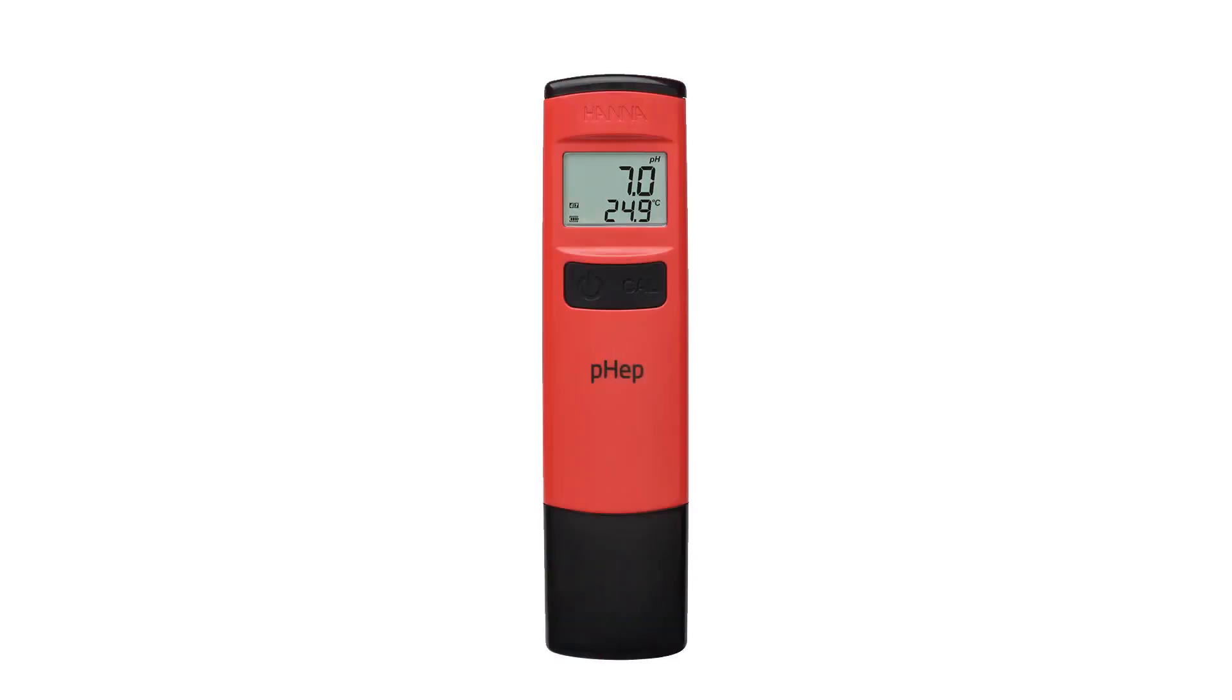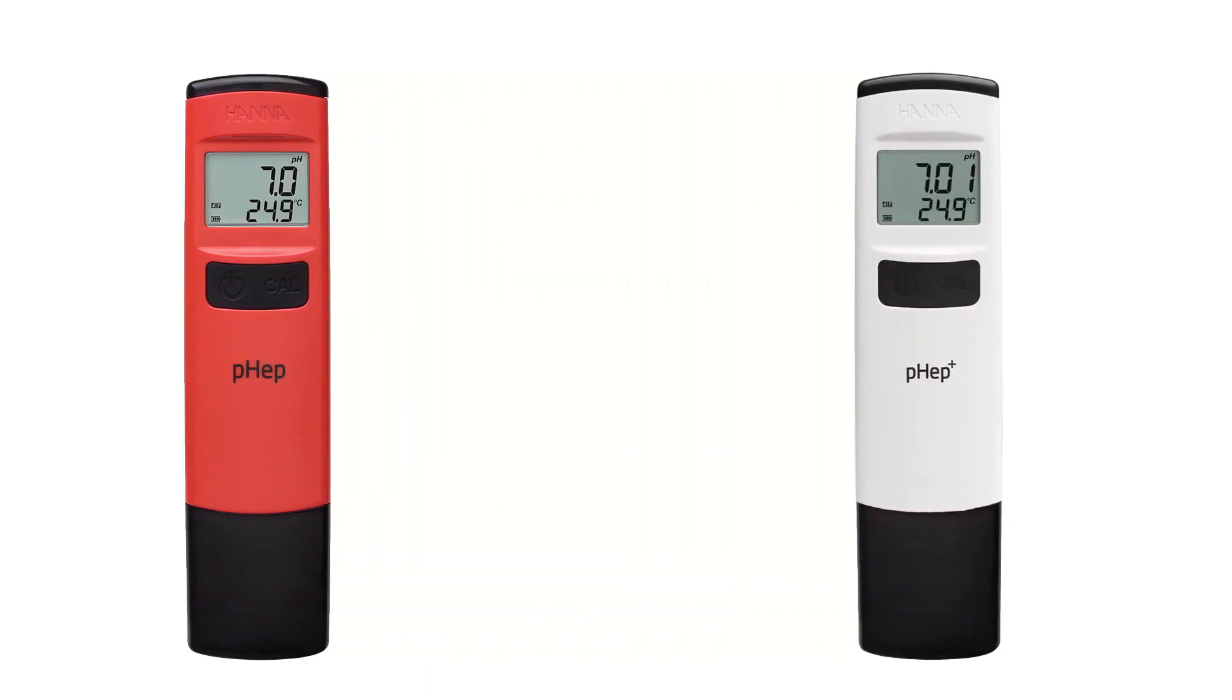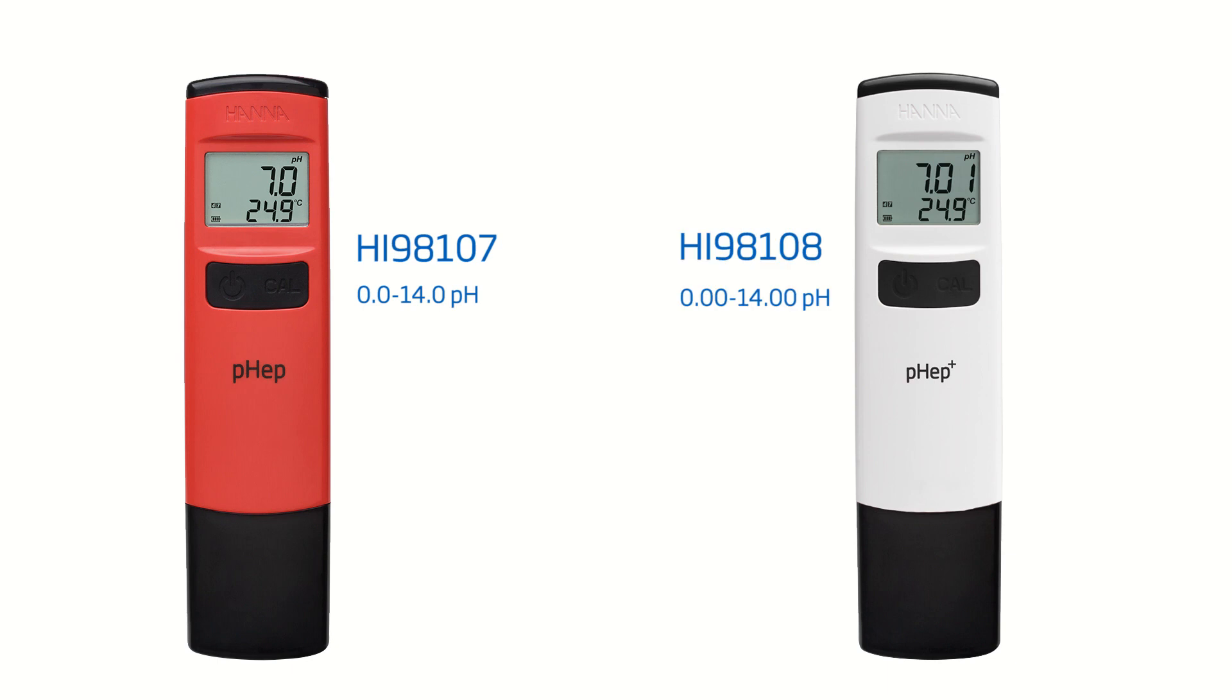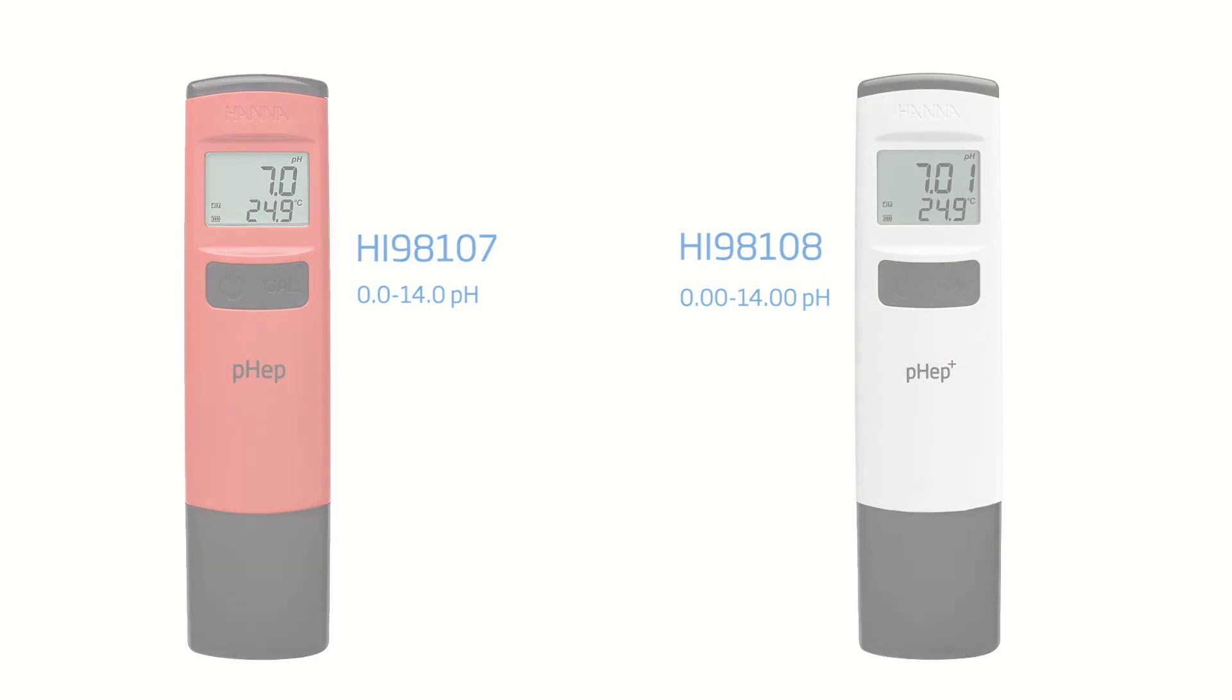Our two most popular meters in the pHep family have been redesigned. They are the HI98107 and the HI98108. Both meters operate in the same fashion, with the only difference being the resolution.